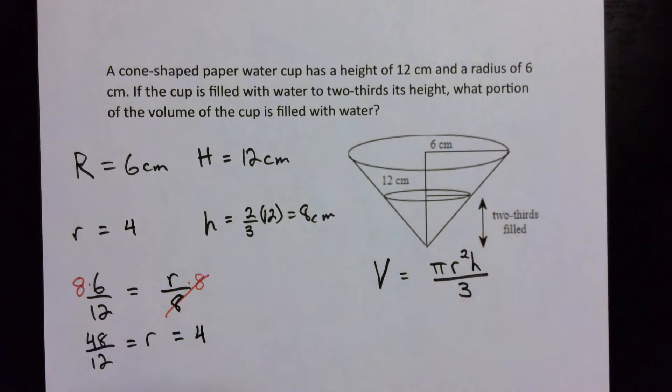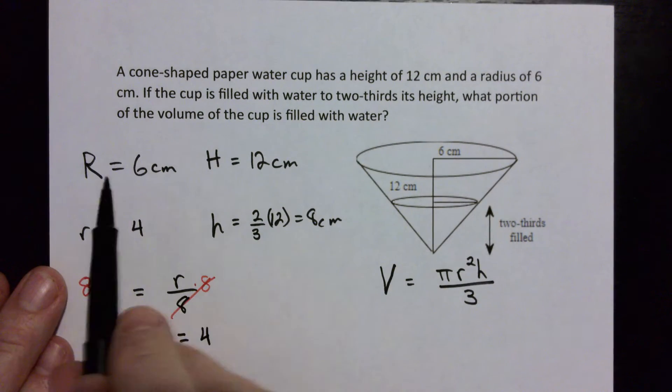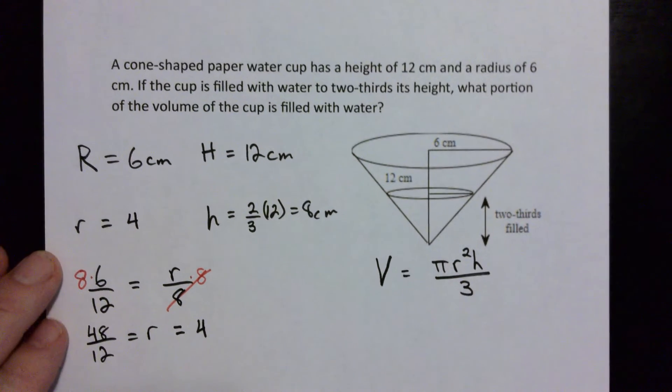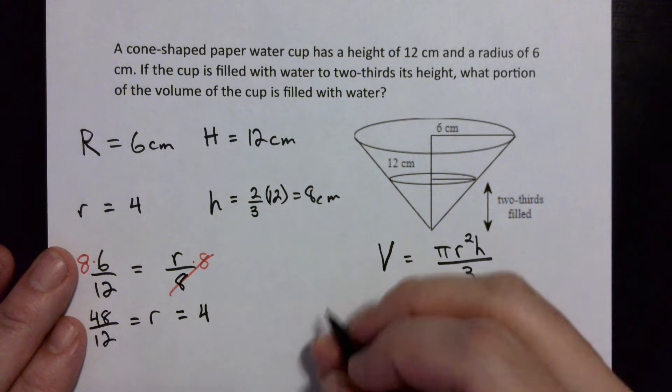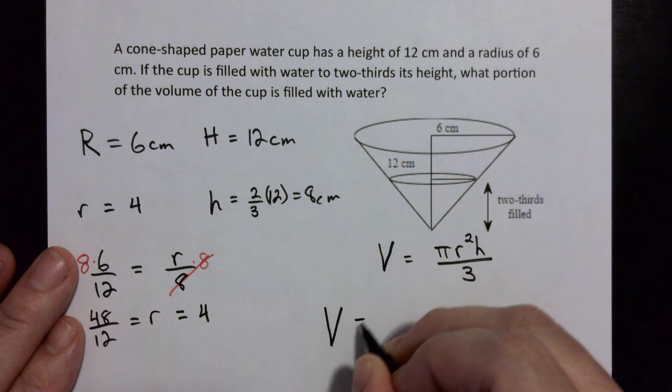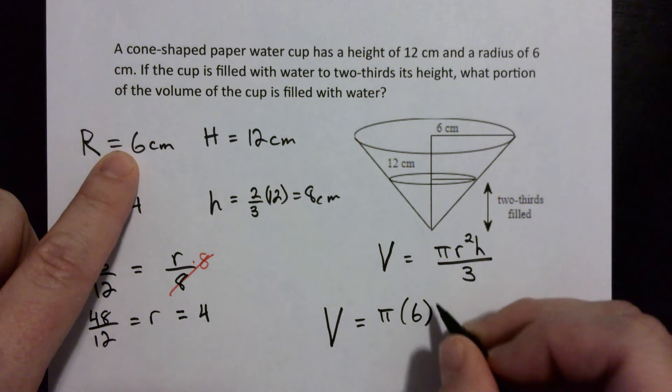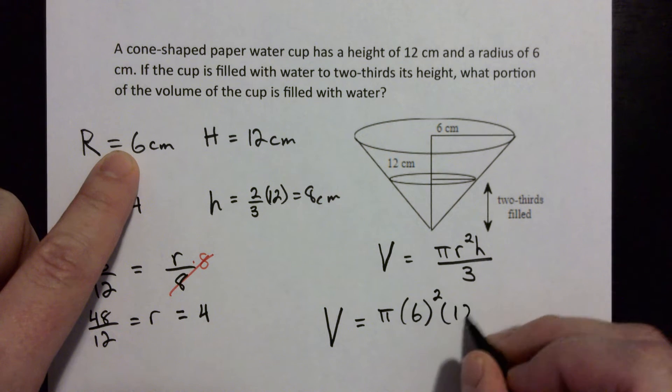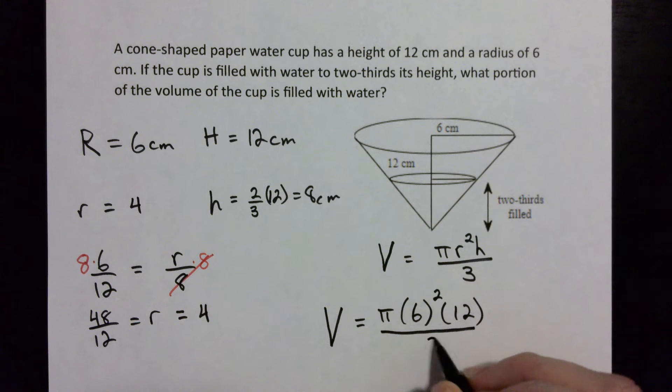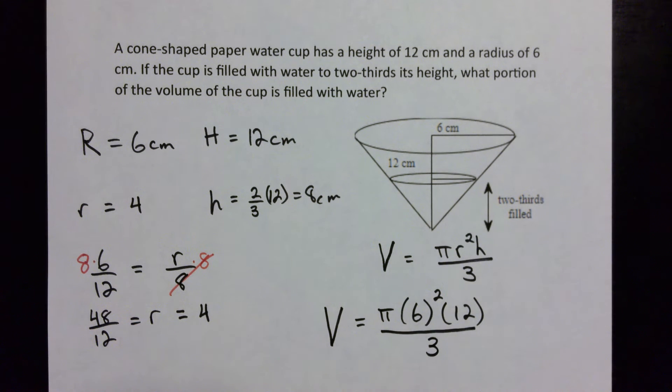Okay, so we're going to use this formula right here twice, one with the larger numbers and one with the smaller numbers, and then we're going to compare them to each other. So start with the bigger one: V is equal to π, our r is 6, so 6 squared, and our h is 12 divided by 3.